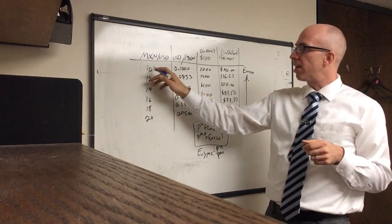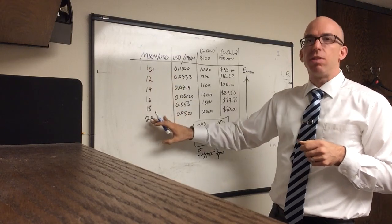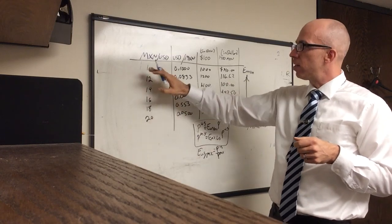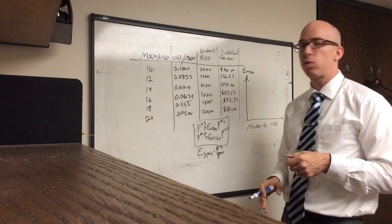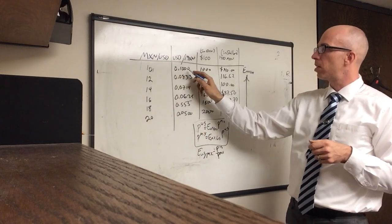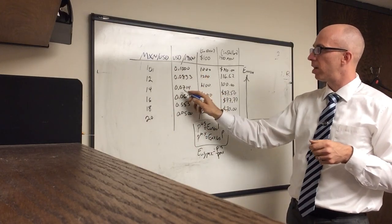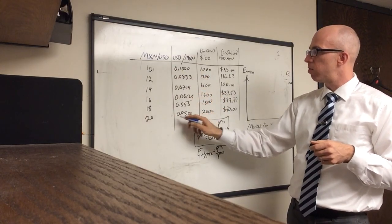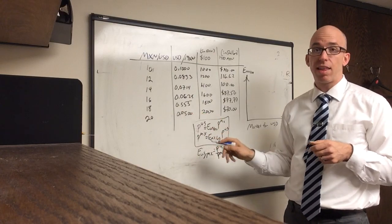I've got a fairly reasonable range for the dollar-peso: 10, 12, 14, 16, 18, and 20 pesos per dollar. If you take the reciprocal, it's 0.1, 0.0833, and so forth until we get to 1/20th. As the pesos-per-dollar number rises, the reciprocal falls.